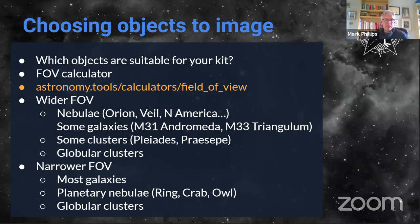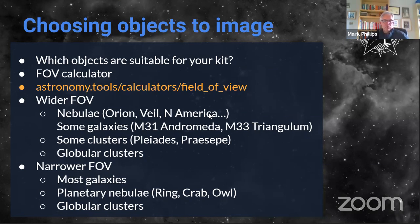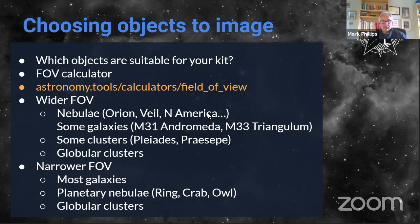For choosing which objects to image, it's a good idea to plan ahead rather than just pointing at something random. A useful online tool is the astronomy tools field of view calculator, linked from the First Light Optics website. Wide field setups suit the Orion Nebula, North American Nebula, Andromeda, Triangulum, and the Pleiades. Narrow field setups are better for most galaxies, planetary nebulae like the Ring Nebula which can look like just another star if too small, and globular clusters.